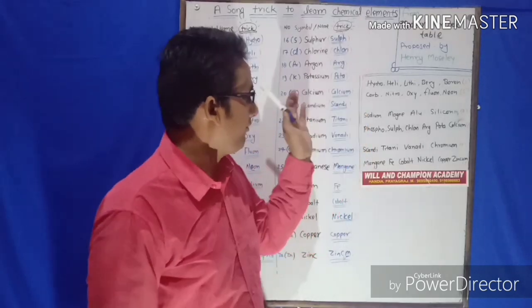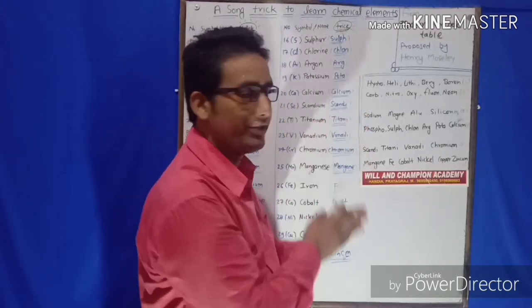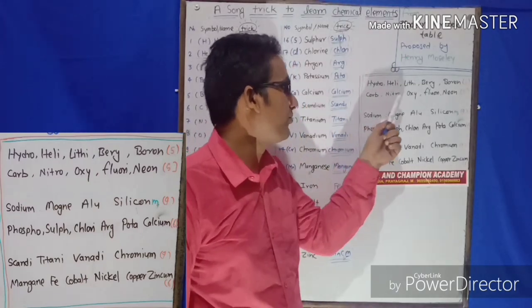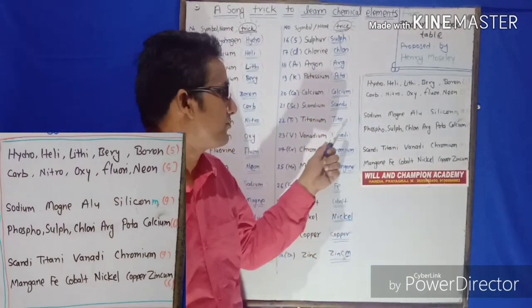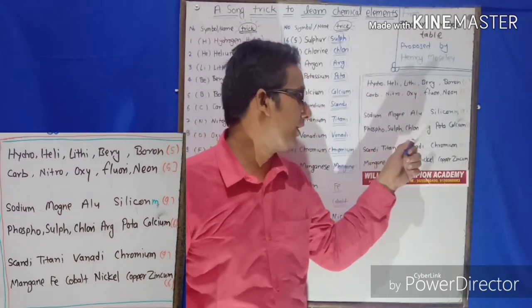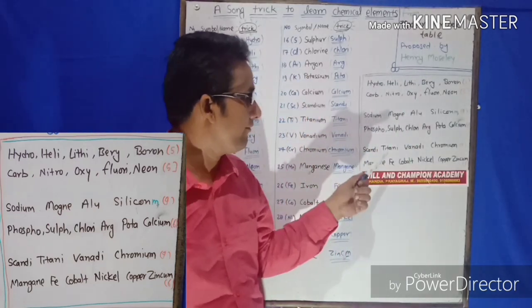Here we go with this process once again with proper rhythm. Hydro, Heli, Lithi, Beri, Boran, Carbo, Nitro, Oxi, Fluori, Neon, Sodium, Magne, Alu, Silicum, Phospho, Sulfu, Chlori, Argo, Potate, Calcium, Scandi, Titani, Vanadi, Chromi.